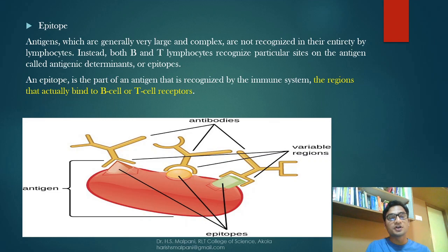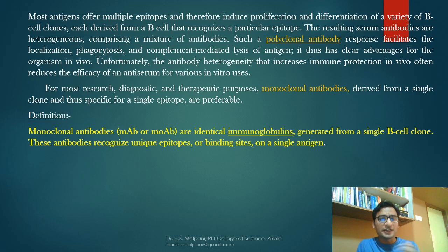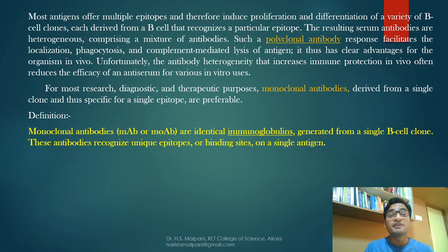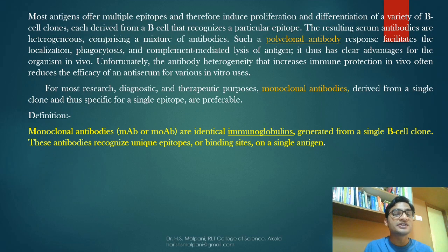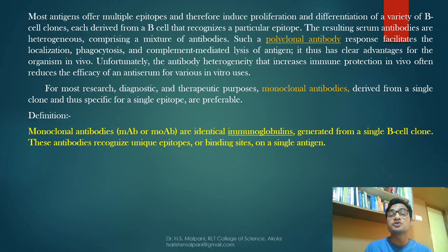Before moving toward monoclonal antibody, we need to understand polyclonal antibodies. Most antigens have multiple epitopes and therefore induce proliferation and differentiation of a variety of B cell clones, each derived from a B cell that recognizes a particular epitope. The resulting serum antibodies are heterogeneous, comprising a mixture of antibodies. Such a polyclonal antibody response facilitates localization, phagocytosis, and complement-mediated lysis of antigen, giving a clear advantage in vivo. Unfortunately, this heterogeneity increases immune protection in vivo but cannot be useful for in vitro uses such as research and diagnostics.